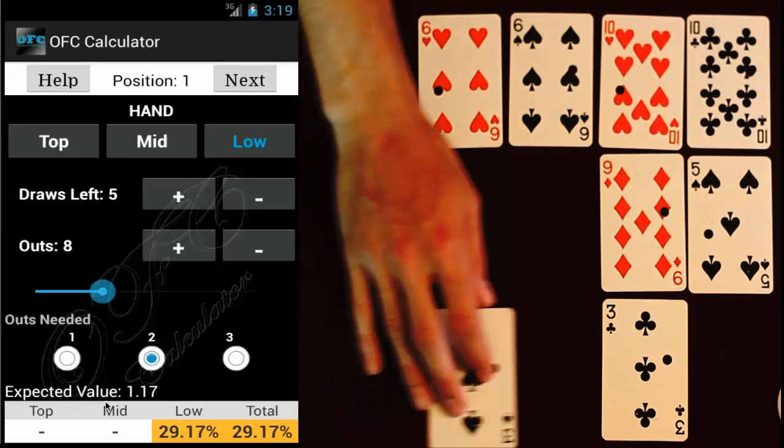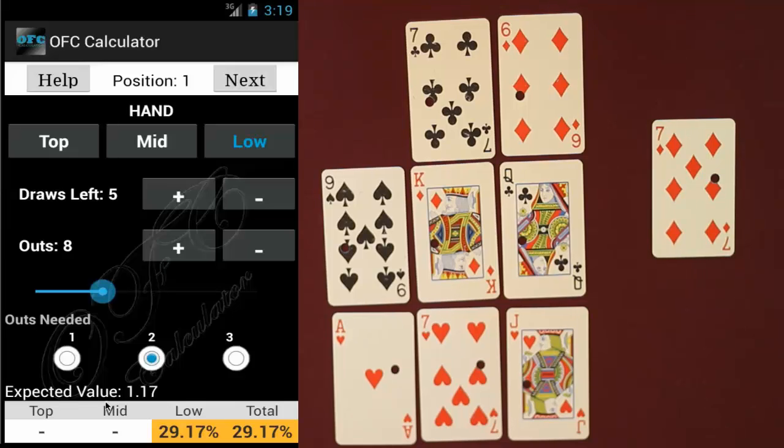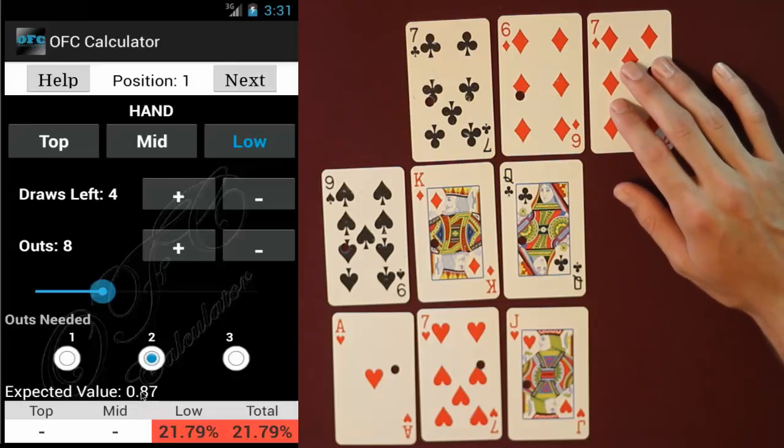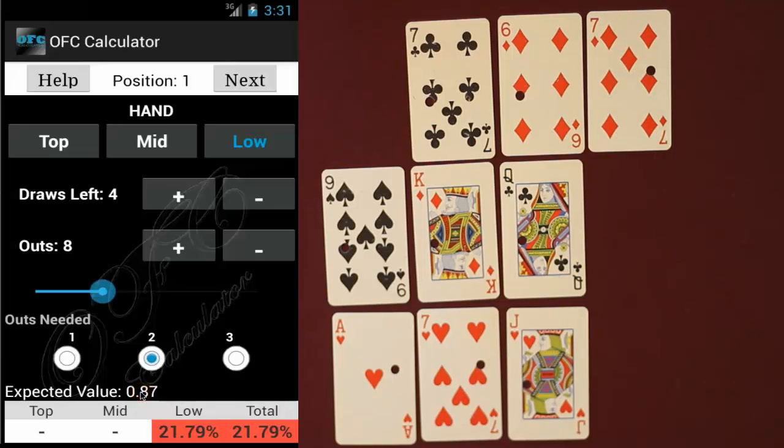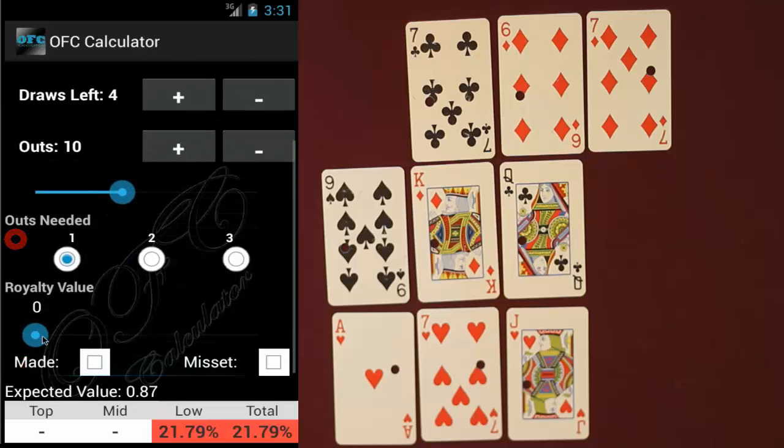Now our opponent draws a three of spades and we draw a seven of diamonds. So decrease our draws by one and then what we can do is at the top of the calculator click on the top tab and what you're going to do is change the royalty value to two which is a pretty standard royalty for sevens up top and then you're going to click this check mark called made which basically just tells the app that you have already made this hand and you can see that it adjusts the EV value accordingly and also change your top percentage to 100.